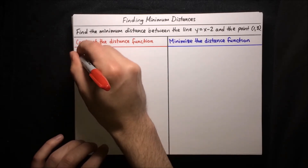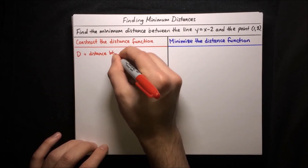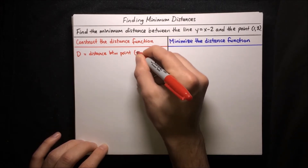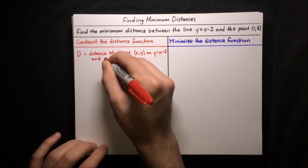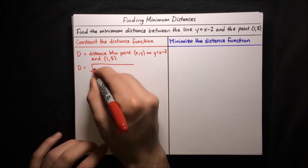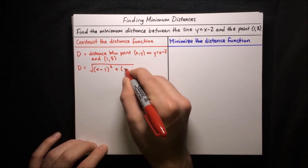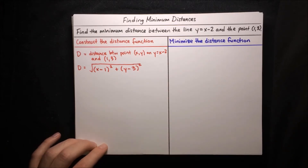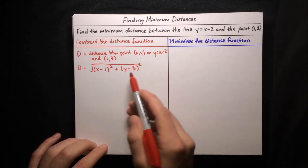Let's define our distance function as d, equal to the distance between some point (x, y) on the line y equals x minus two and the other given point (1, 3). Using the distance formula, we can write that as the square root of the sum of squared differences: square root of (x minus 1) squared plus (y minus 3) squared. Since we want to minimize this and need a single variable, we substitute y equals x minus two into the formula.